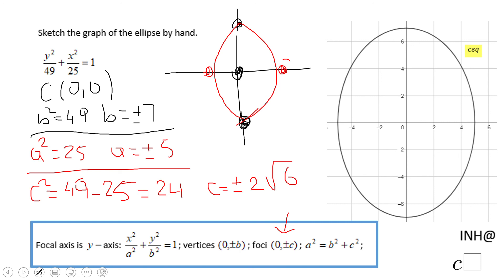So the foci are on the y-axis, 2 square root of 6 up from (0,0) and 2 square root of 6 down from (0,0), if you need to plot them.